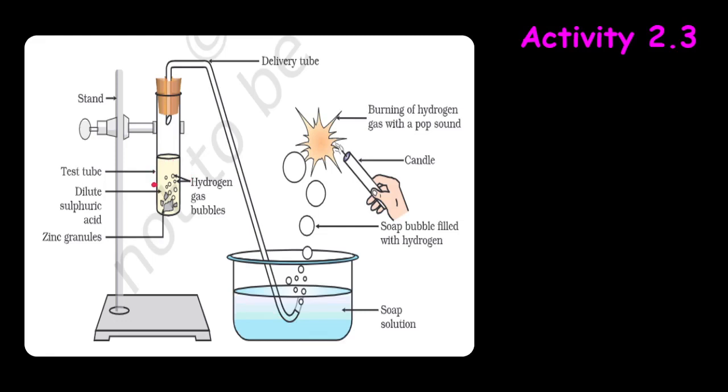So first of all, we are going to take 5 ml of sulfuric acid in the test tube and add a few pieces of zinc granules to it. Then we will add zinc granules.